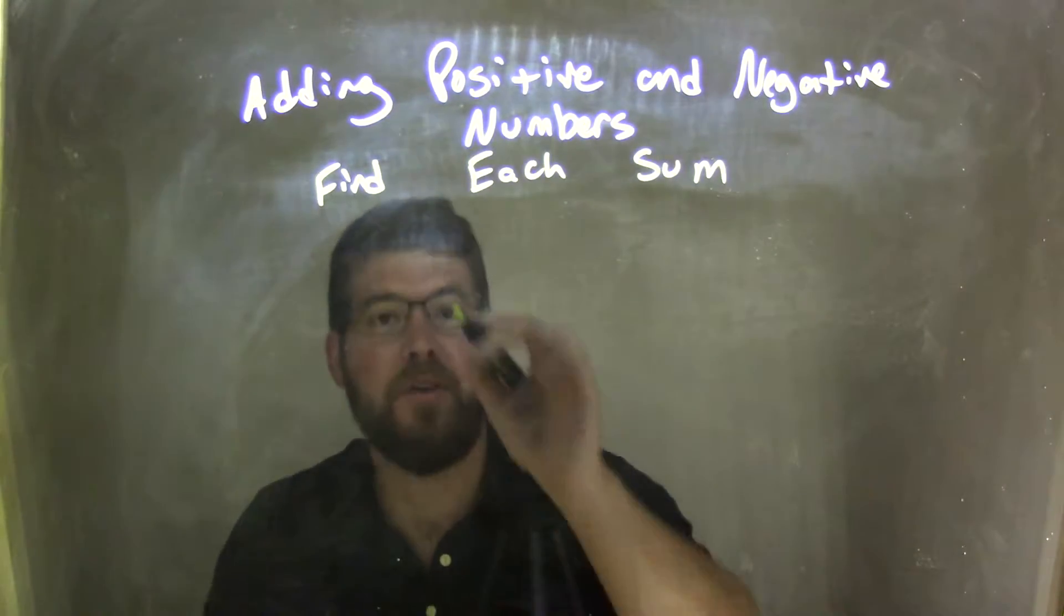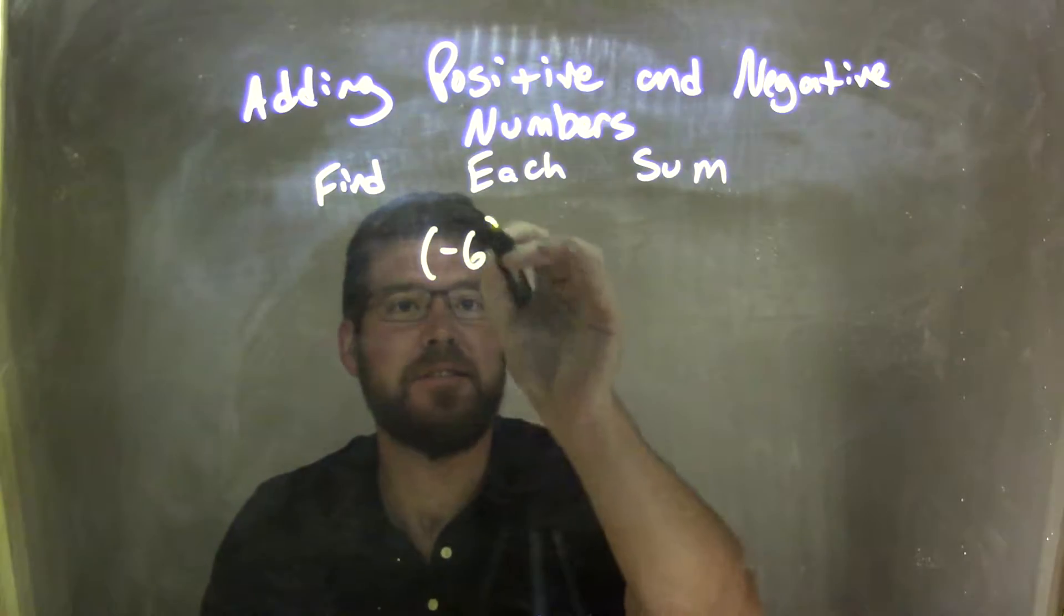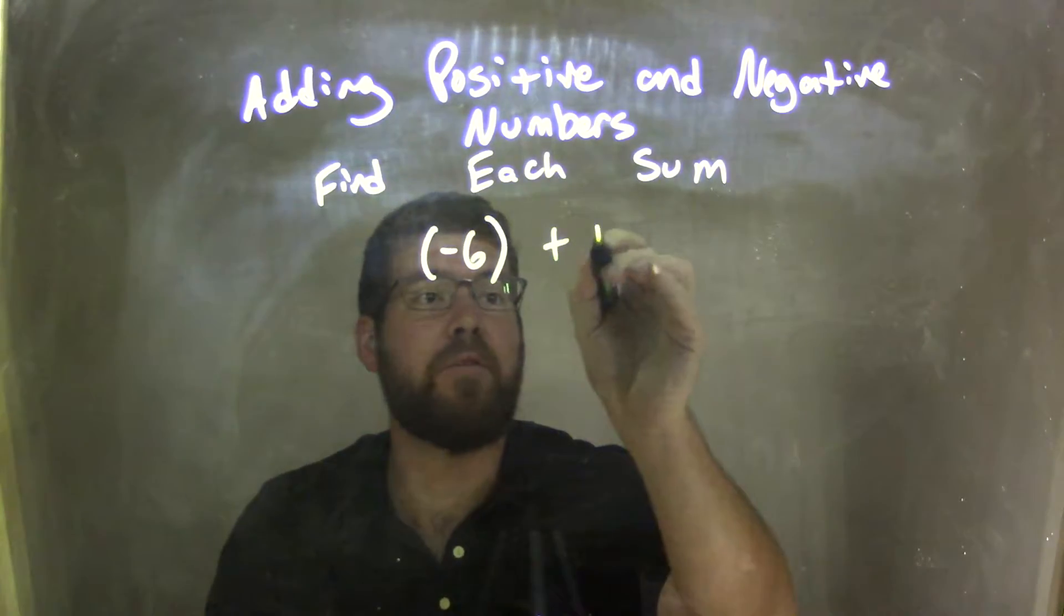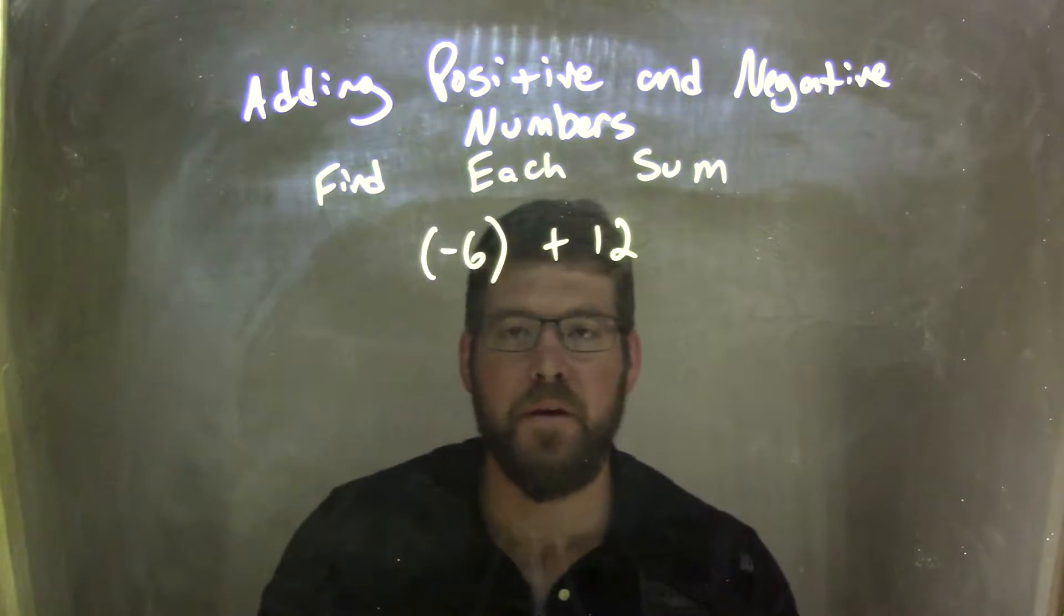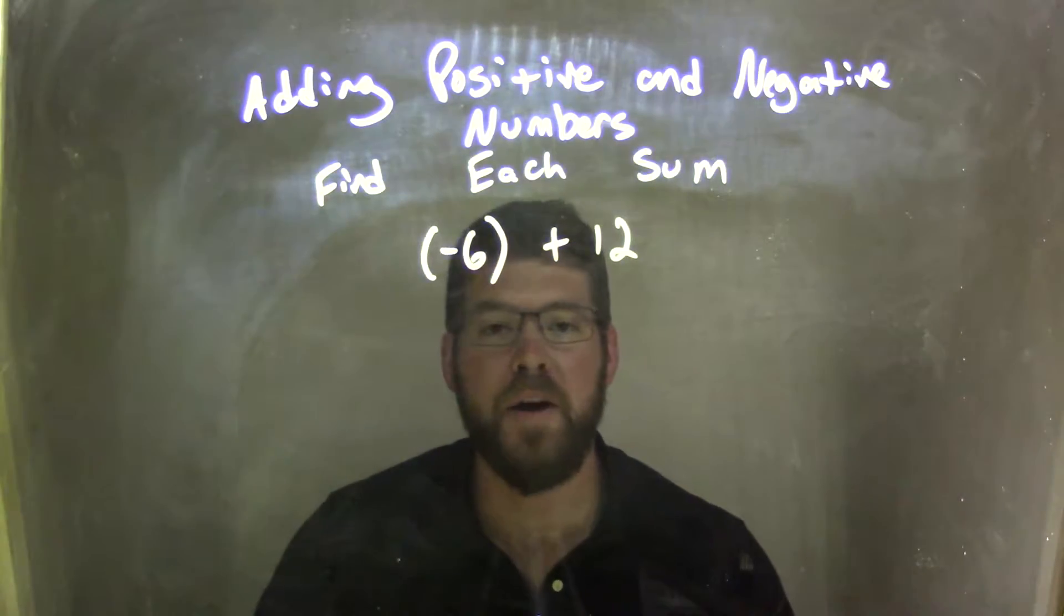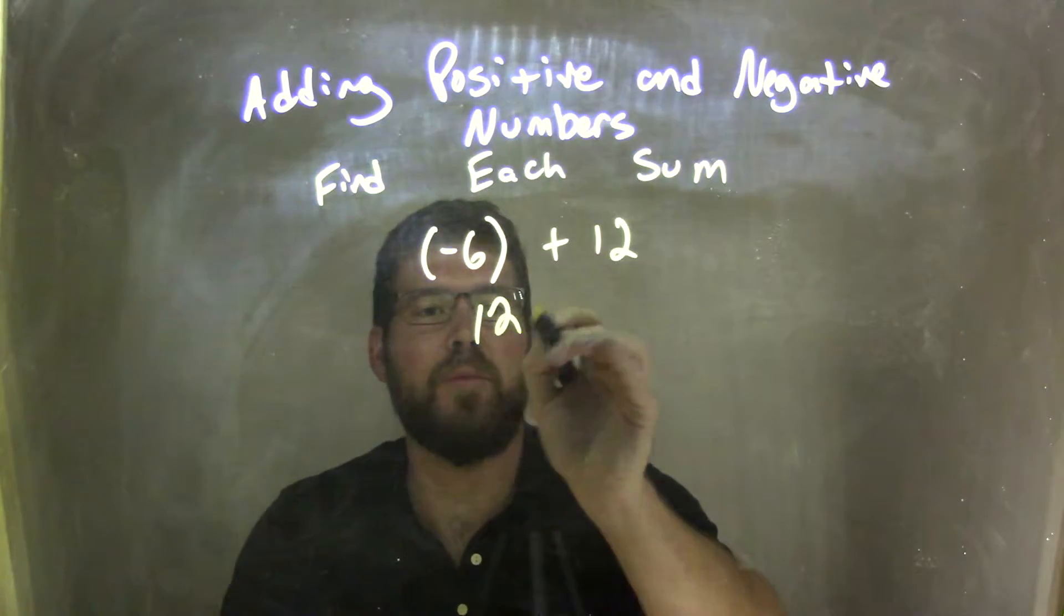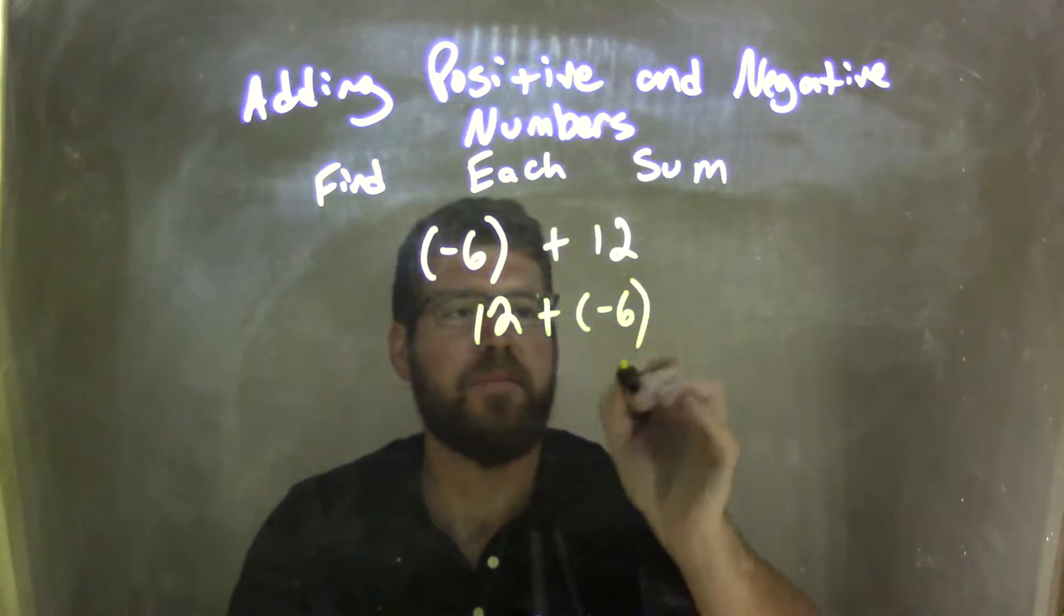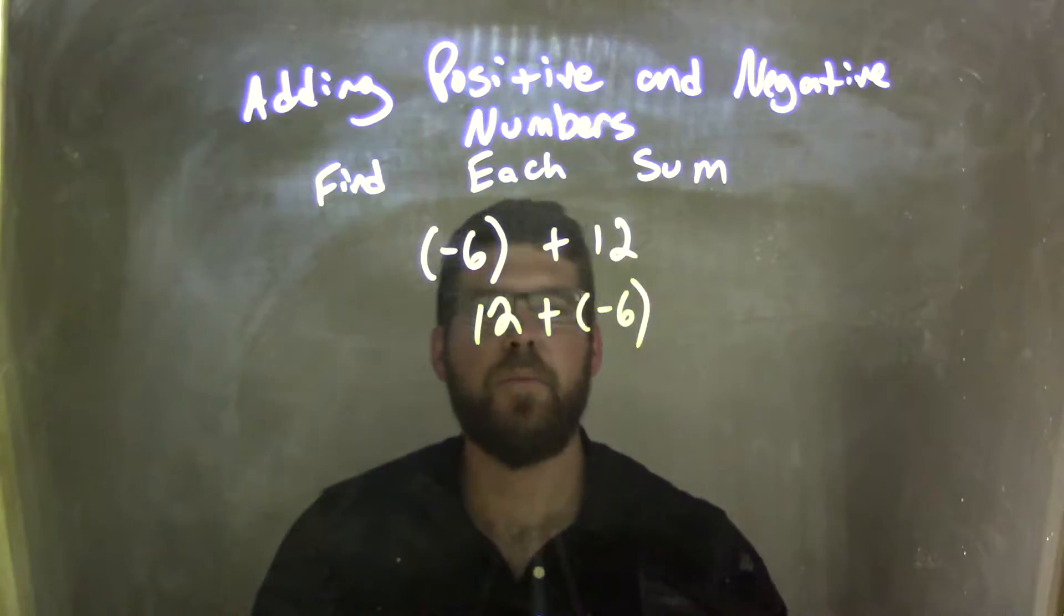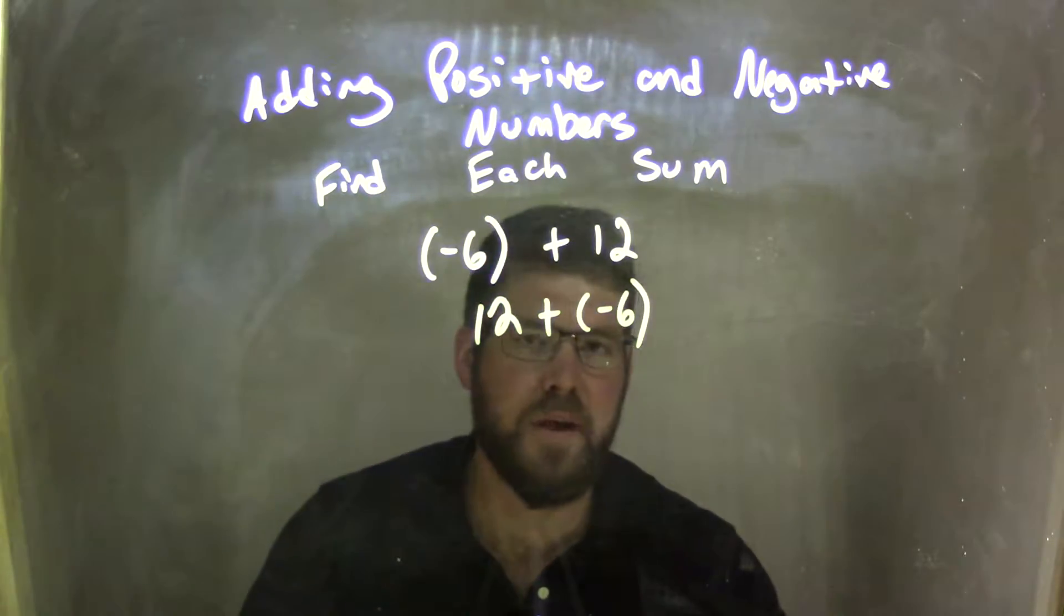So if I was given this expression, negative 6 plus 12, I know by the commutative property that I can rearrange this to have it as 12 plus negative 6. So by the commutative property, I rearrange it as 12 plus negative 6.